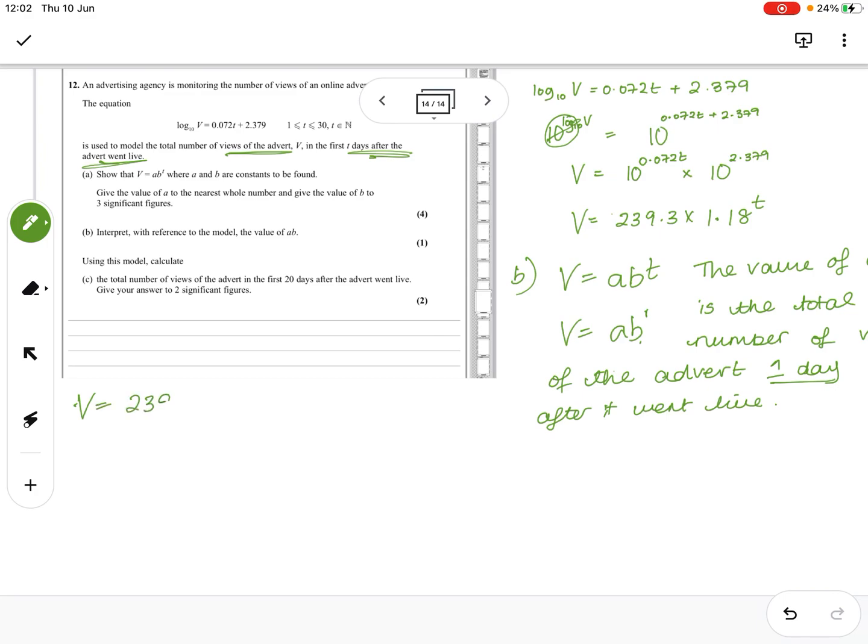So V equals 239.3 times 1.18 to the power 20, which gives me 6555.15318. It wants it to two sig figs, so it's 6500.